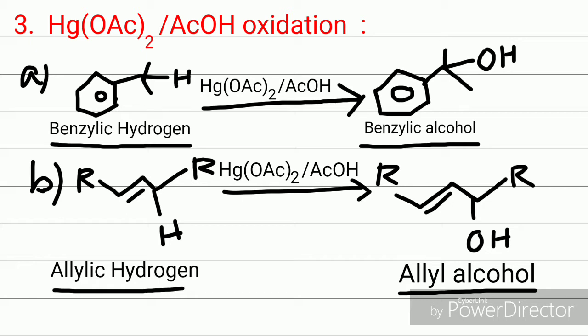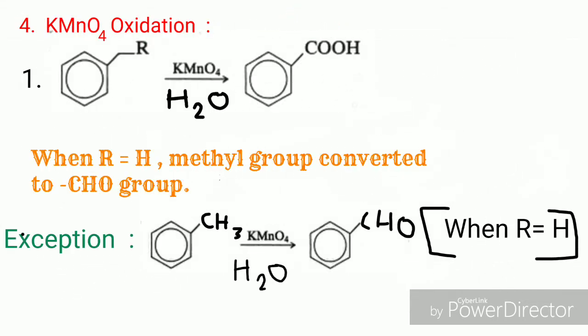The third is mercuric acetate–acetic acid oxidation. Here, benzylic or allylic CH₂ is converted to C–OH, as you can see, by treatment with mercuric acetate and acetic acid to produce benzylic or allylic alcohol.